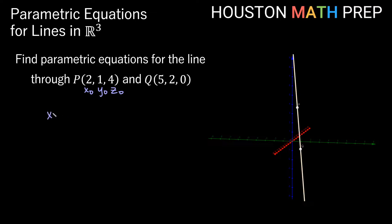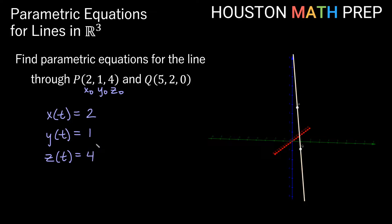I'm going to have x as a function of t, y as a function of t, and z as a function of t. According to what we said before, x0, y0, z0 are going to be the constants in each equation — so 2, 1, and 4 going down: x0 in the x equation, y0 in the y equation, z0 in the z equation. We'll also need a vector that points in the direction of this line. We can find the vector from P to Q.